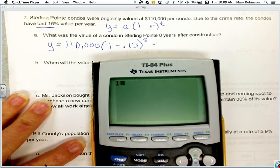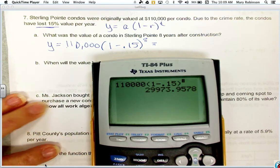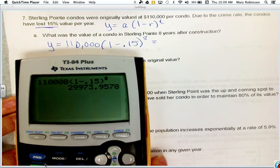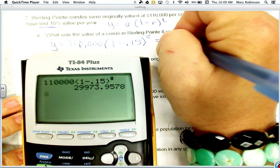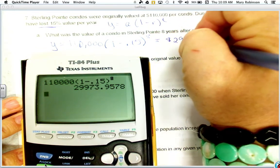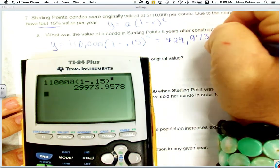So in our calculator, I'm going to type in $110,000 times 1 minus 0.15 to the 8th power, and the value of the condo would be worth $29,973.96.